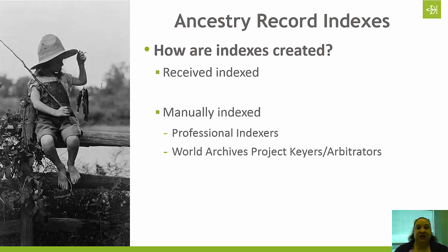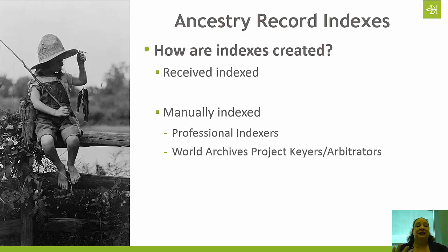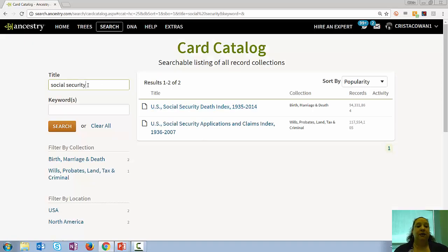A large bulk of our records — probably the majority — are actually manually indexed, which means a person has to look at every single image and every single record on that image and type in what is seen. That helps us create the index. Think about things like census records, passenger lists, draft cards — anything where there's an image on Ancestry, somebody has gone in and manually typed that information in.